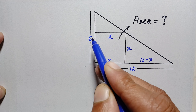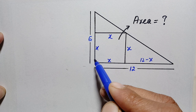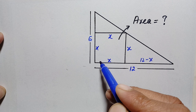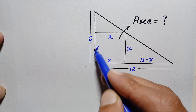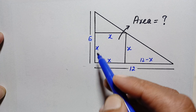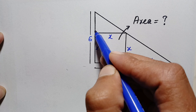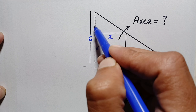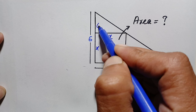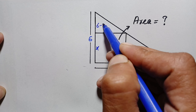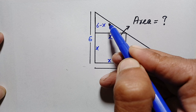Now look at the height of this right angle triangle. The full height is 6 units and this length is x units, so the remaining length will be 6 minus x units.